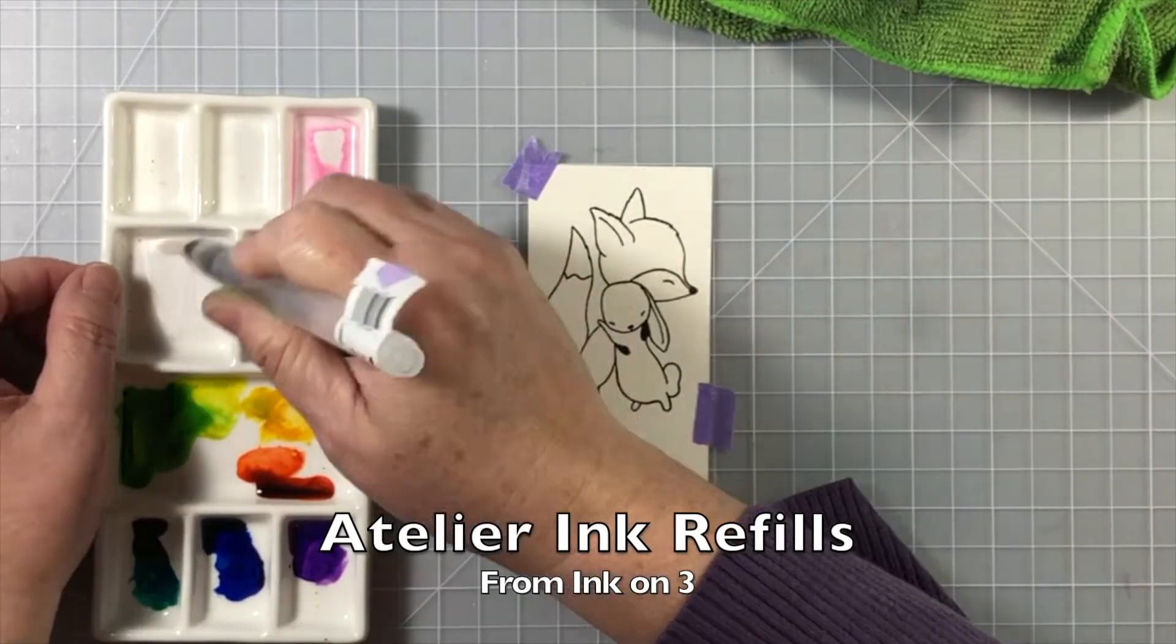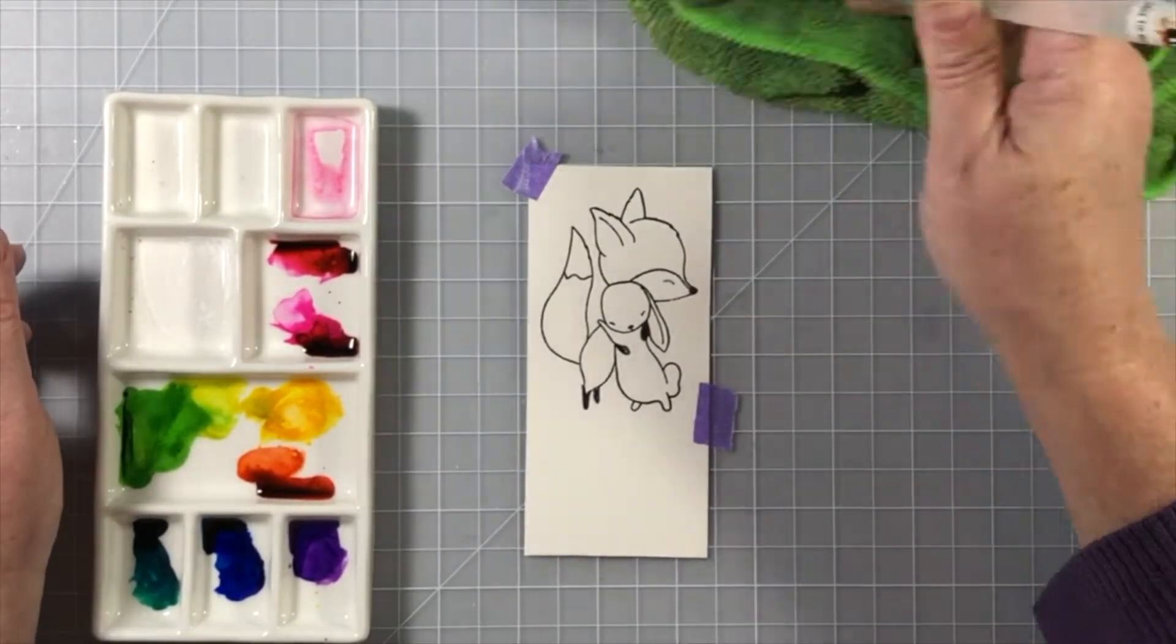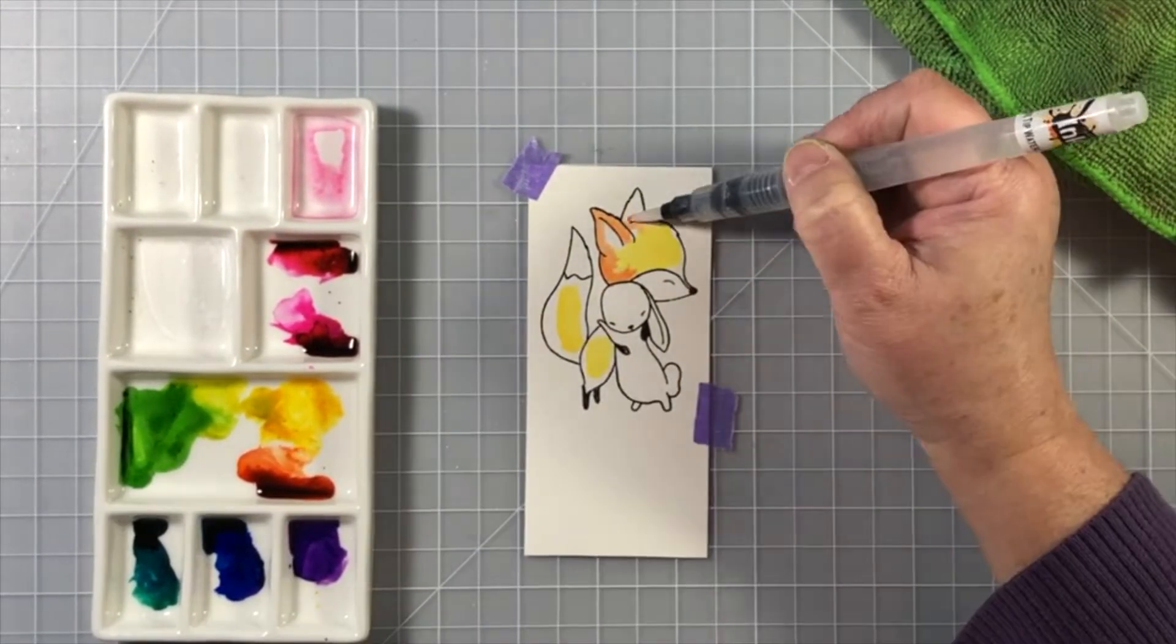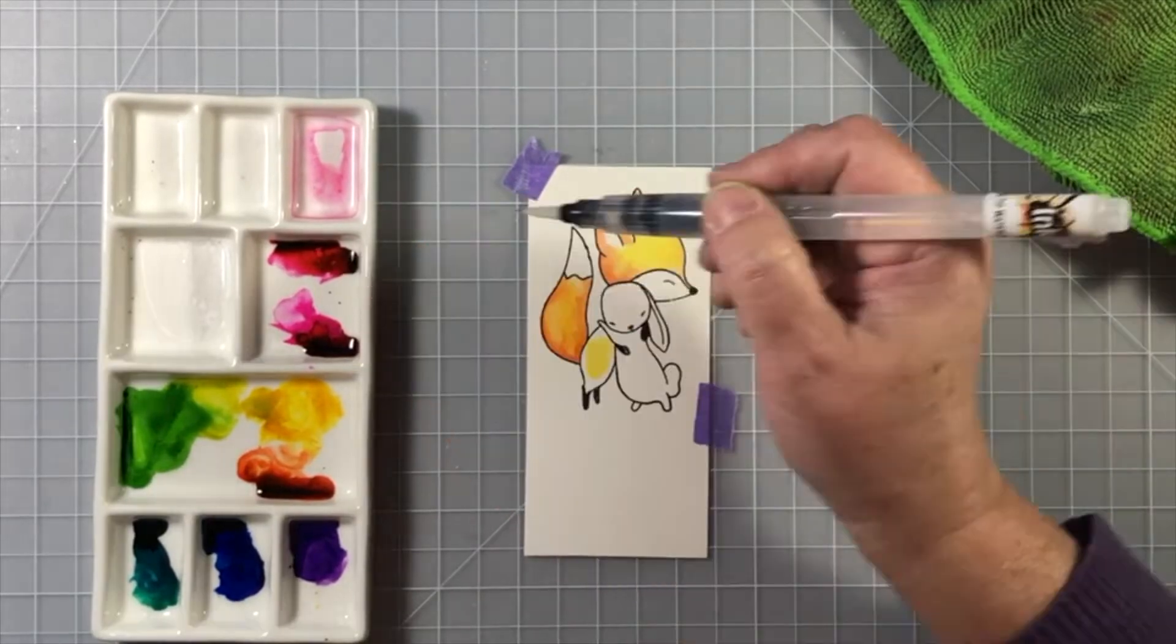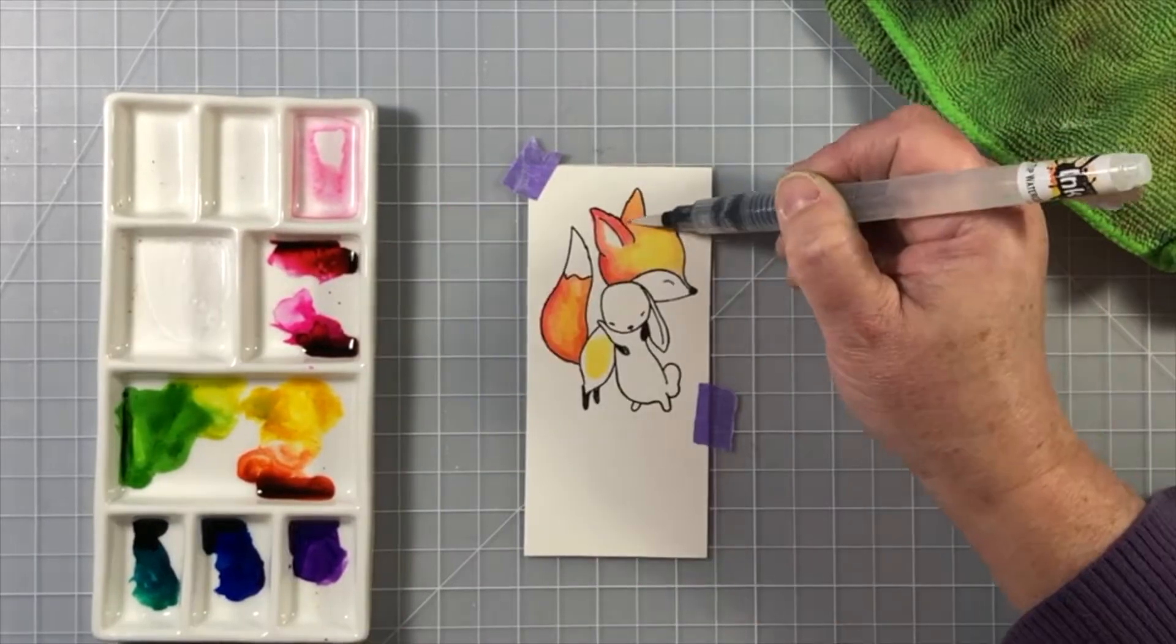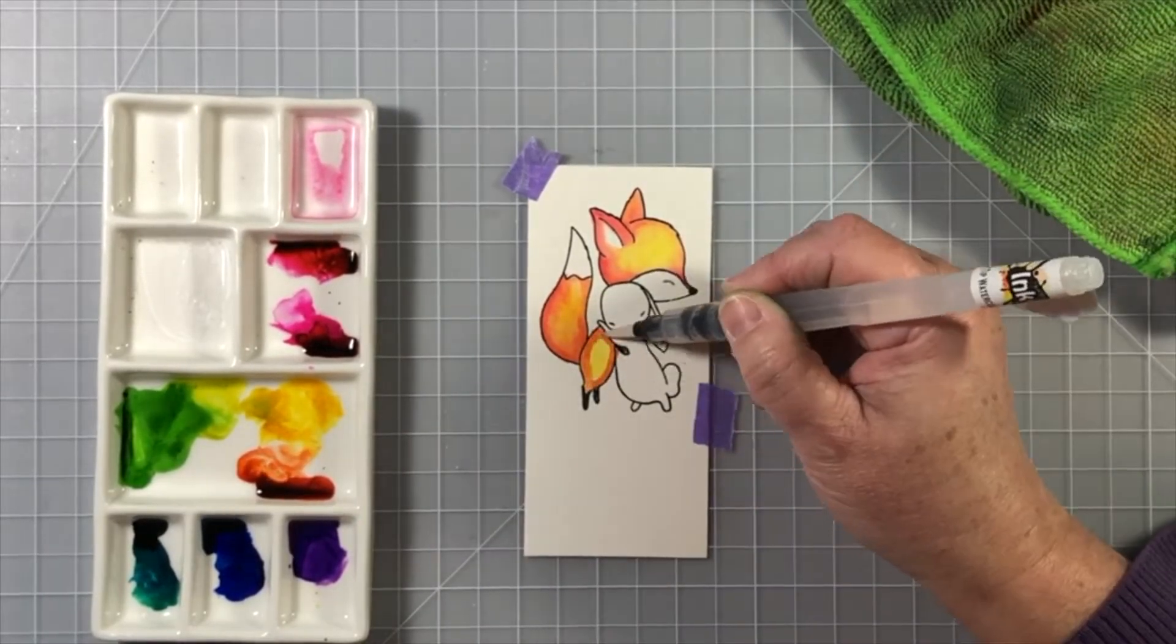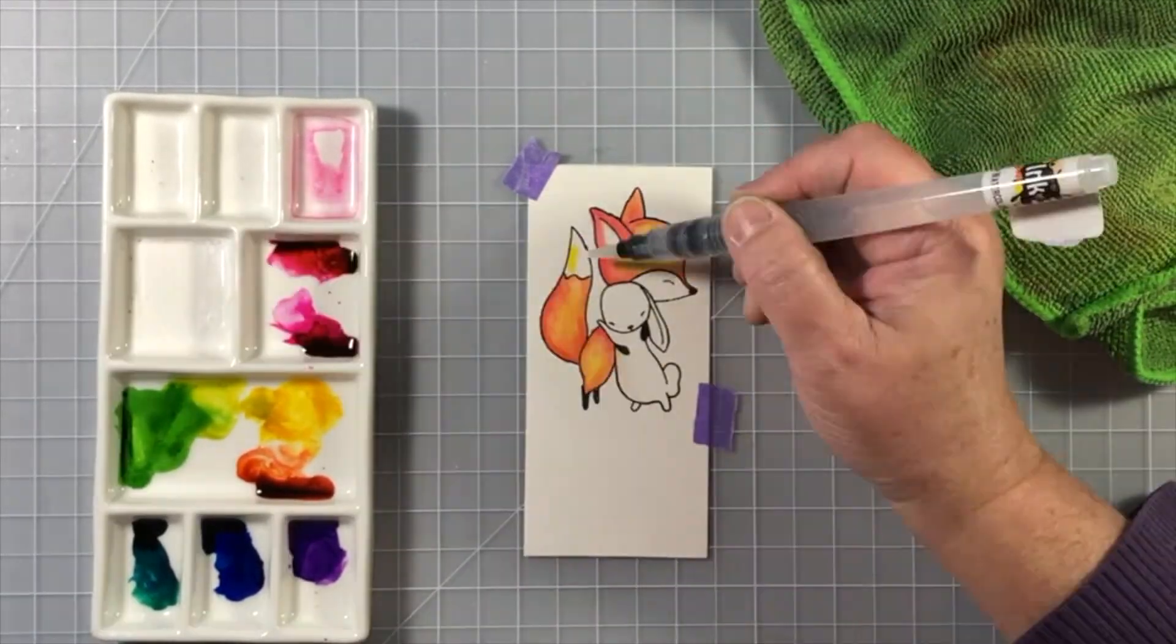Once that is heat set, the embossing powder, then I am going to do some really easy watercoloring. I almost always keep some Atelier ink refills dripped into my porcelain palette. This is something that is really handy for me because the ink refills from Ink on 3 work the same as liquid watercolor. It's just really easy to work with. So that's why I'm not showing me dripping in the ink refills because they're already there. They're always in my palette nowadays.